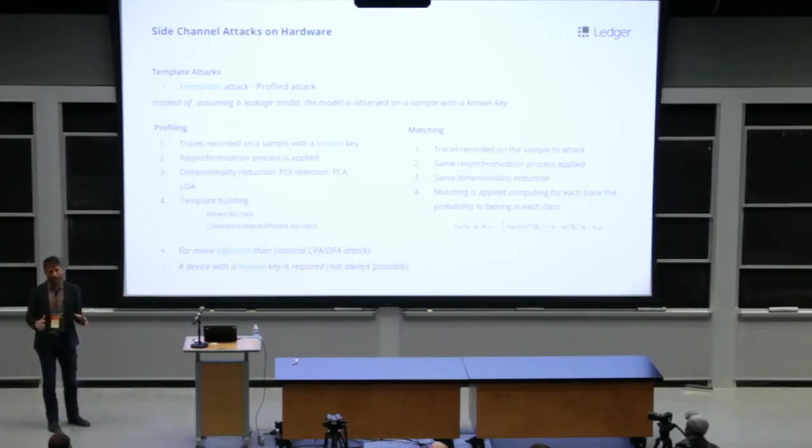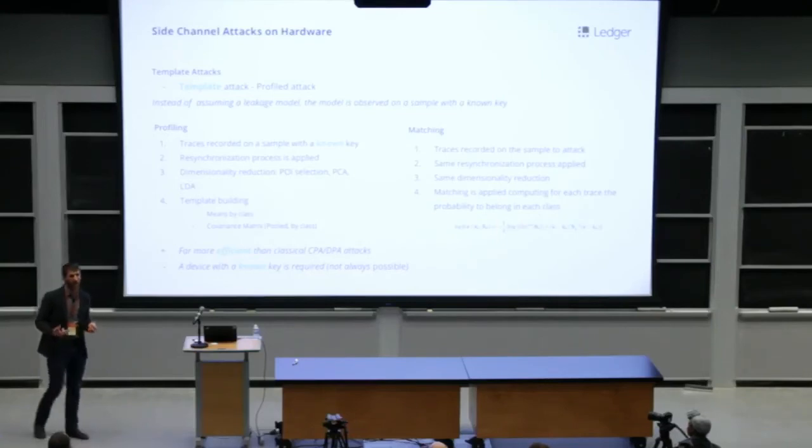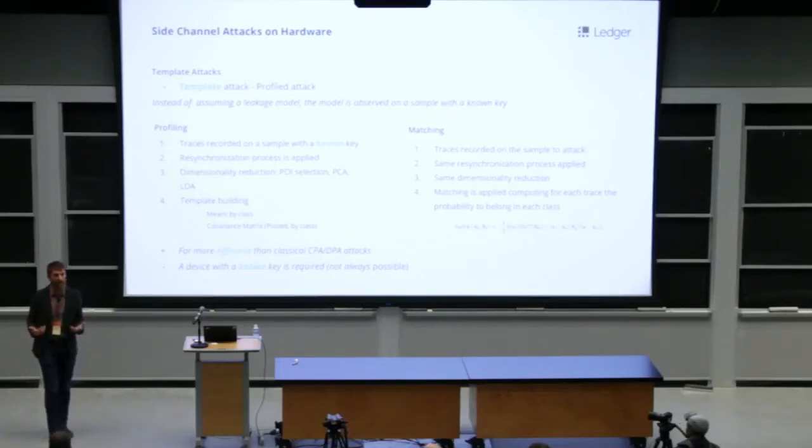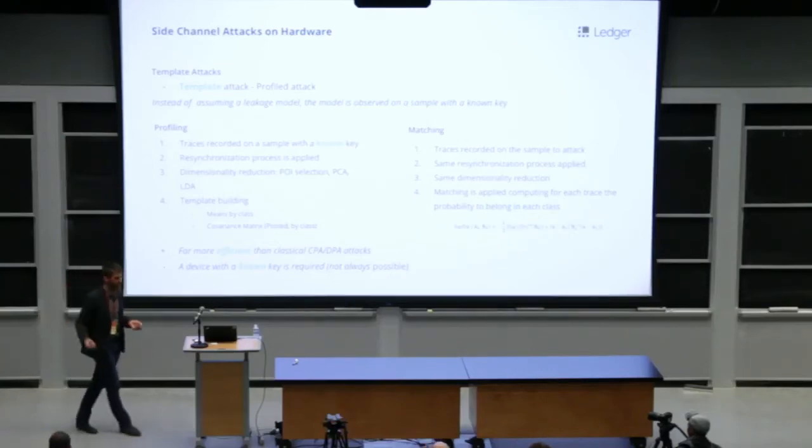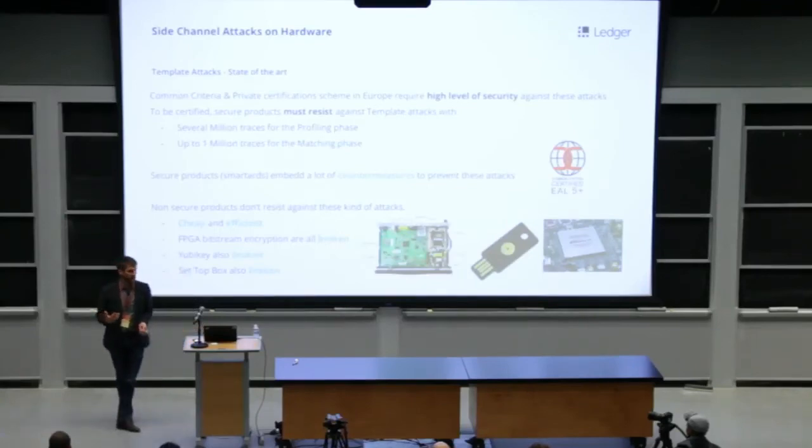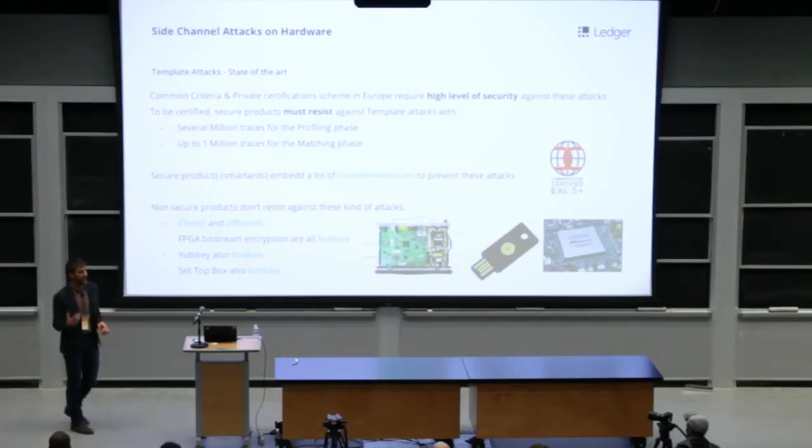Template attacks use again the same phenomenon, but instead of assuming a power consumption model, in this case, the attacker observes the power consumption model on a sample on which they know the key, and then attacks another one. This kind of attack is even more efficient than the CPA, however, it requires the attacker to have a sample with a known key, which is often the case.